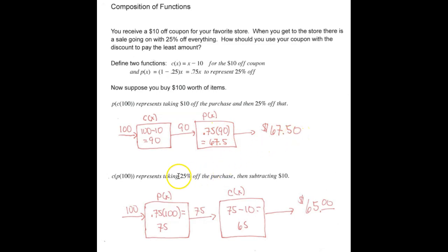The other choice is we take our $100. We take the 25% off first, which gives us $75. And then we use our coupon to take $10 off of that, leaving us with a bill of $65. So you can see the second choice is best. And that's an example of how you would use composition of functions in a real life situation.